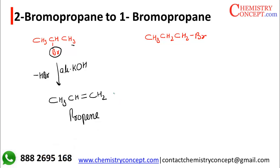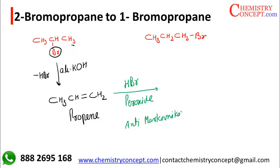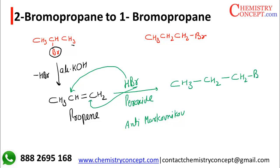Next, we react propene with HBr in the presence of peroxide. Addition takes place as per the anti-Markovnikov rule — H goes to the double-bonded carbon which has fewer hydrogens, and Br goes to the one with more hydrogens — resulting in the formation of CH3 CH2 CH2Br, which is 1-bromopropane. So it's a two-step conversion.